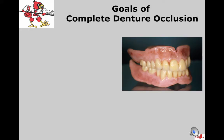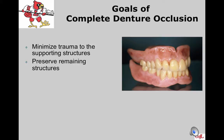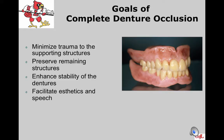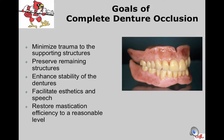The overall goal when establishing complete denture occlusion is to minimize trauma to the supporting tissues and preserve those remaining structures by having occlusion that is as least traumatic to the underlying surface as possible. We need to enhance stability of the dentures, facilitate aesthetics and speech, and restore masticatory efficiency — though that efficiency with complete dentures is only about 50% of what you get with natural dentition, if that much.